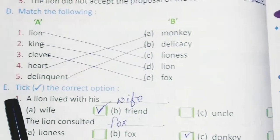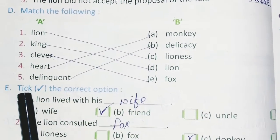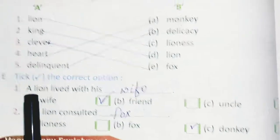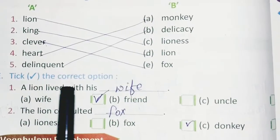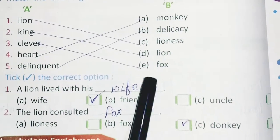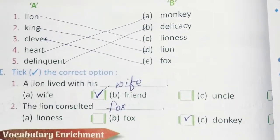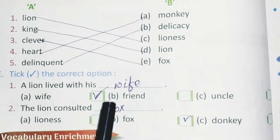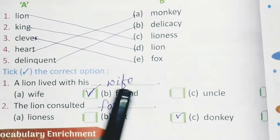Exercise E: Tick the correct option. 1. The lion lived with his wife. 2. The lion consulted the fox.